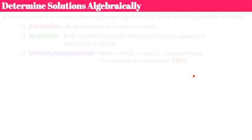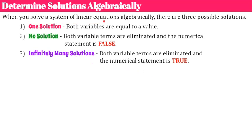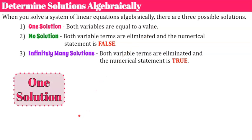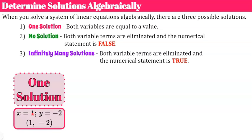Now there's another way to determine types of solutions — solving algebraically, either using substitution or elimination. When you solve a system of linear equations algebraically, there are three possible solutions. One solution is when both variables equal a value: you solve and get x equals a number, y equals a number, and write it as an ordered pair — your point of intersection.